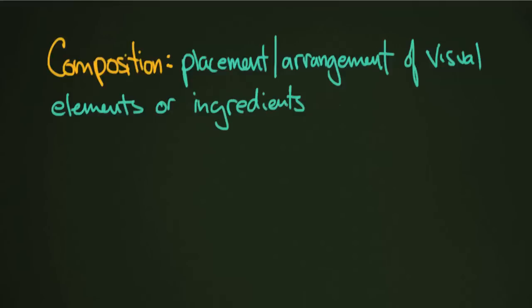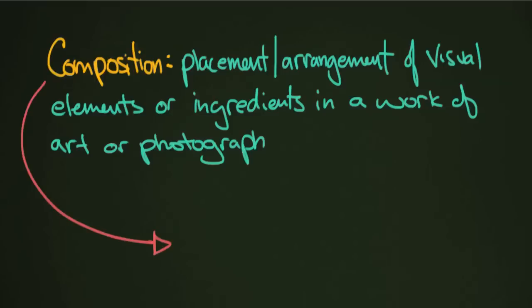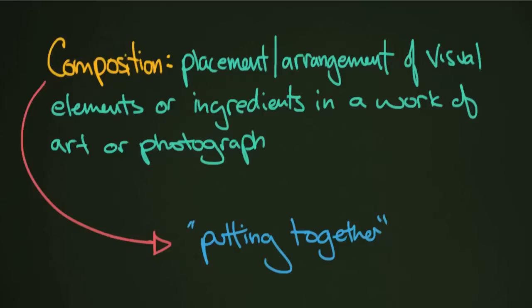We'll look at some examples in just a second. But first, it's good to set up this definition because it's going to be an important element of this course. We have sections called composition, and other sections that cover the more technical aspects of photography. Photography is both an art and a science, and composition is a little bit more the art side of photography.